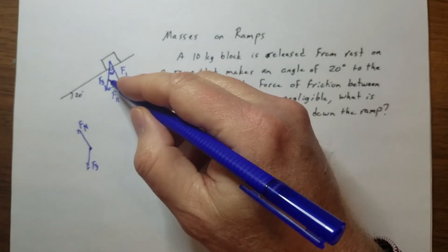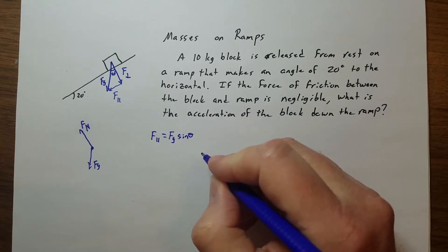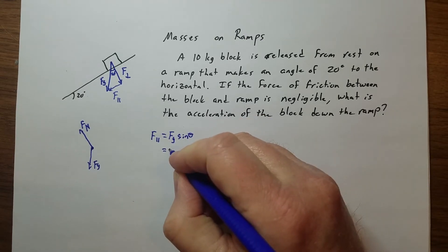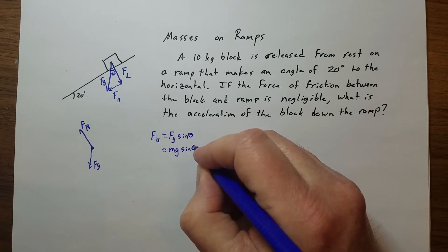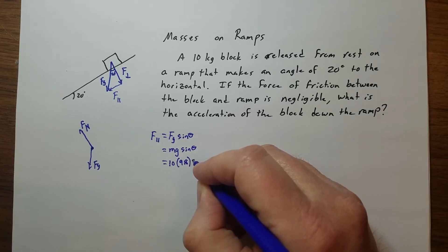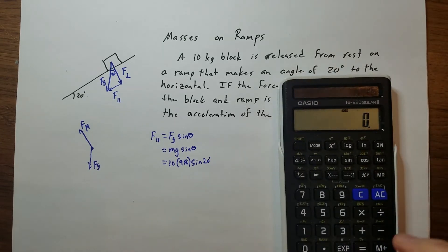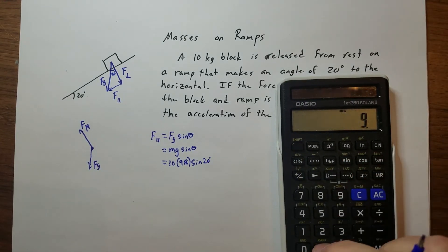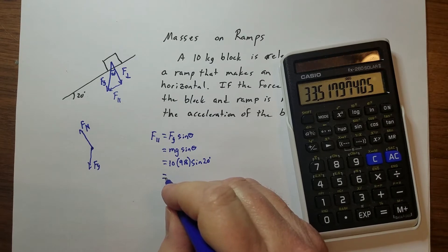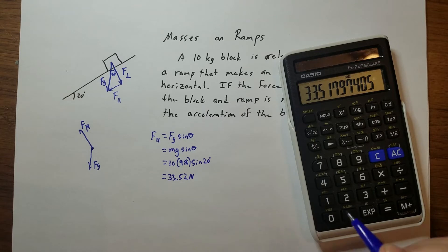Using trigonometry, the force parallel equals the weight of the object times the sine of the angle: F_parallel = mg·sin(θ). So that's 10 times 9.8 times sine of 20 degrees, which gives us a force of 33.52 newtons — that's the force actually taking the block down the ramp.